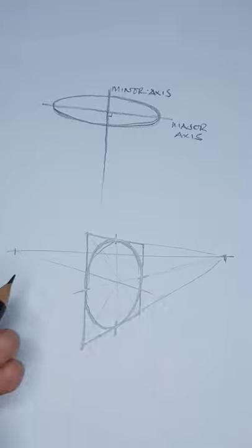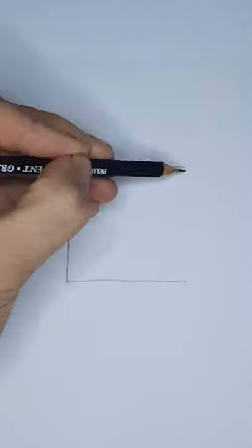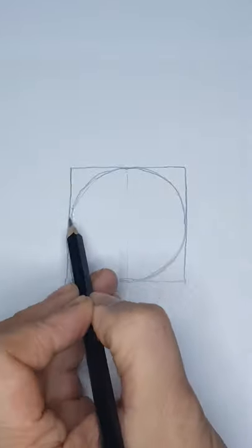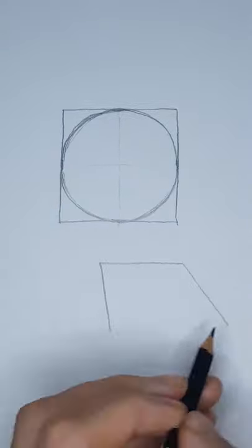So here are two quick ways in which to draw ellipses. First, draw a square and divide it into quarters, where each internal line meets the perimeter draw a short line. Next, carefully draw out the lines. Then try it in perspective.